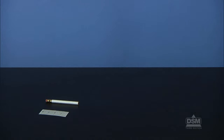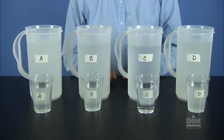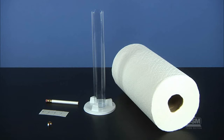Each team of 4 will need one 10-centimeter hydrometer pencil, a pre-printed hydrometer sticker, 1 thumbtack, 1 plastic tube with base, and access to the water samples at each distribution station. Make sure to have paper towels available in case of spills.